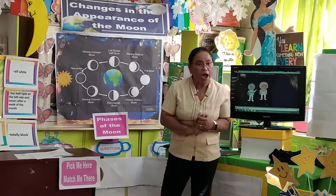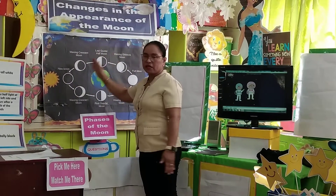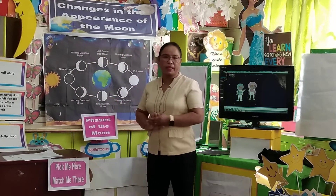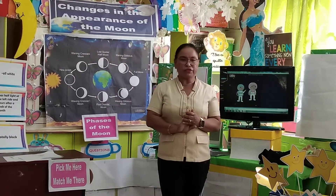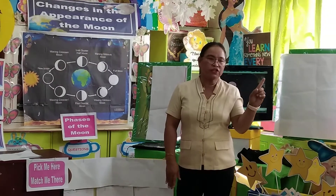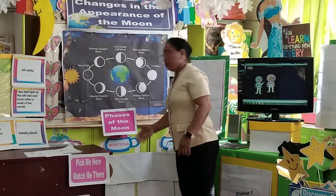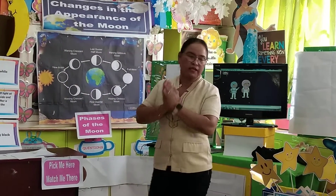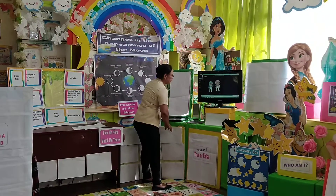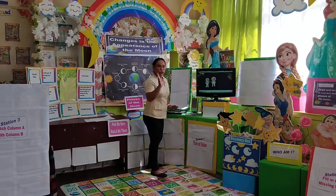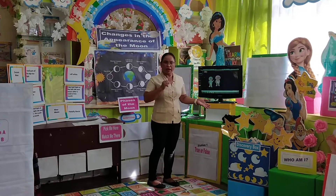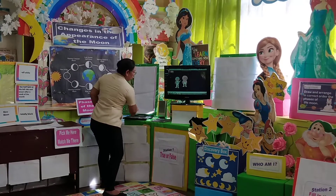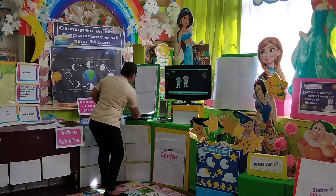What is the other term for the changes in the appearance of the moon? Very good — phases of the moon. Now let's try this activity. I want you to come in front, click the mouse, and try to match the picture if its name is matched. Click the face appearance of the moon corresponding to its given name.